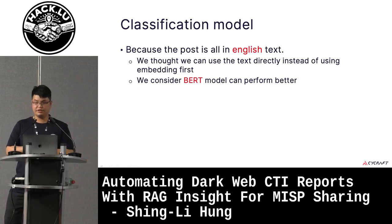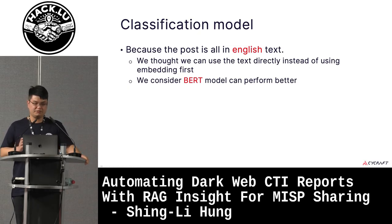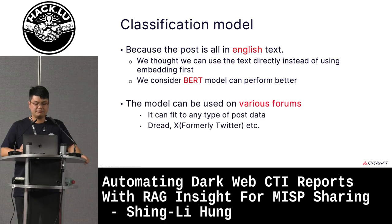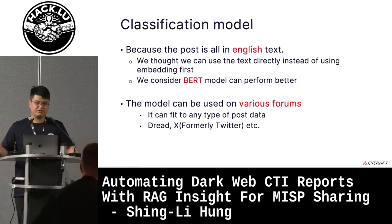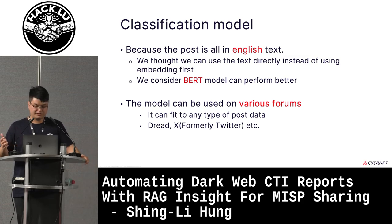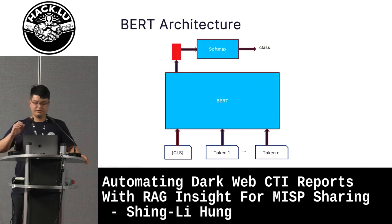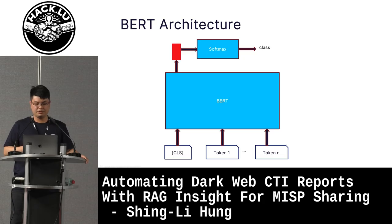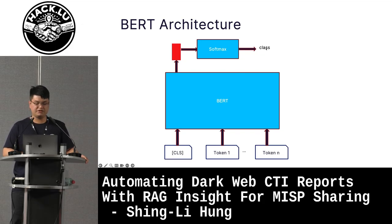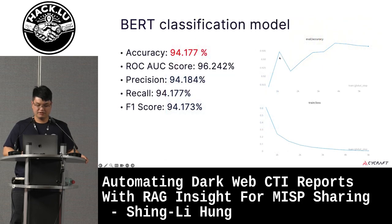Our post data is all English text, so we can use it directly rather than TF-IDF first. We consider BERT to perform better and the model can be used on various forums — it can fit any type of post data, such as XSS, another dark web forum, or X (formerly Twitter). We set up the post as input, the output is the embedding, then add softmax to calculate the probability of each class. The final result achieves 94.177% accuracy.